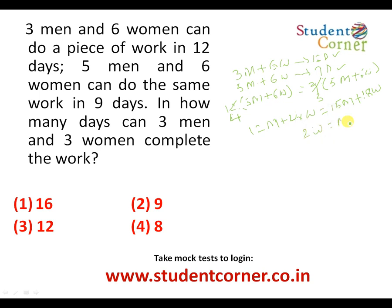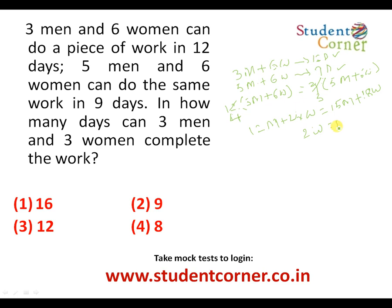Bringing men and women to opposite sides: 72W - 54W = 45M - 36M, giving 18W = 9M, so 2 women = 1 man. Now the question: how many days can 3 men and 3 women complete the work? Since 2W = 1M, then 3M = 6W. Substituting: 3 men + 3 women becomes 6W + 3W = 9 women.